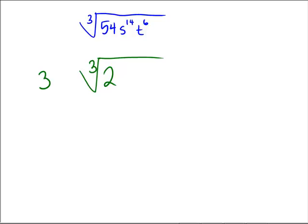On the S to the 14th, I know that we have an S to the 12th, which is a multiple of 3, so I'm going to put an S to the 4th out here and leave the extra S squared in there. That's going to give me all 14 copies of S.